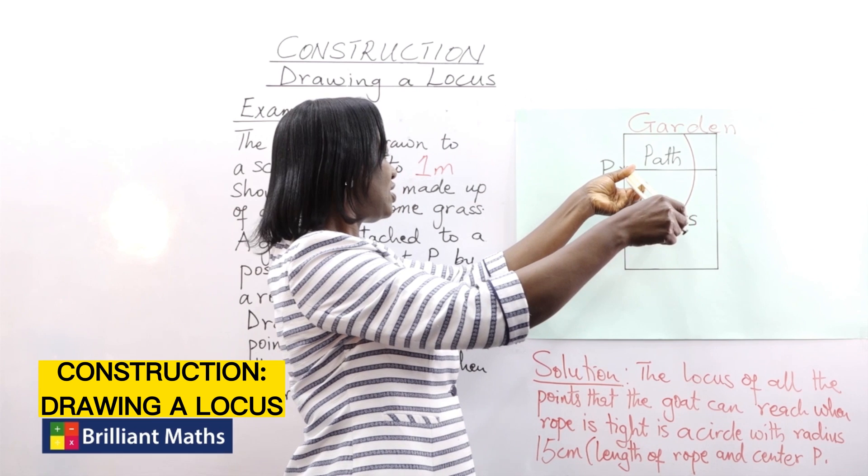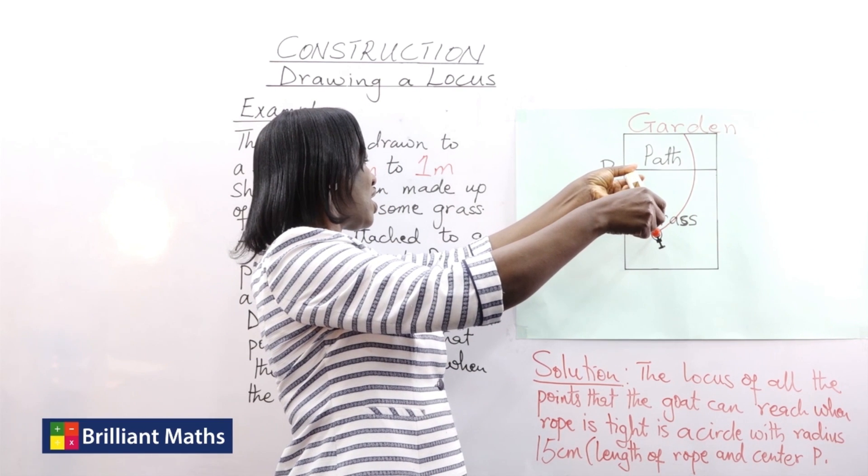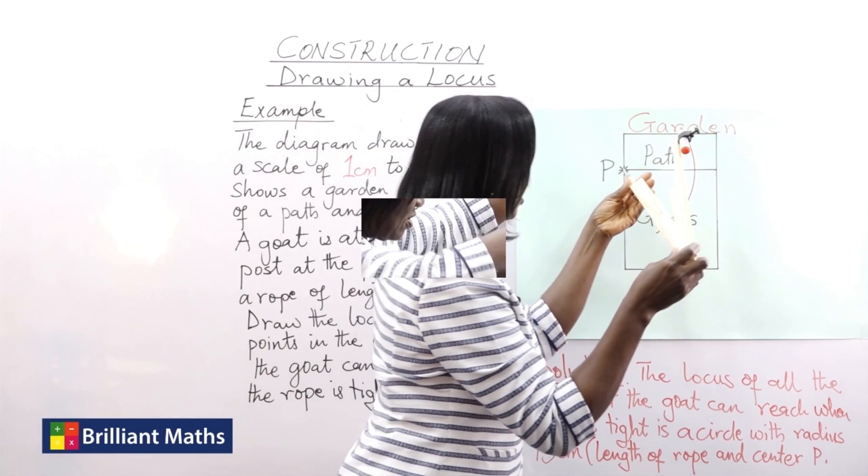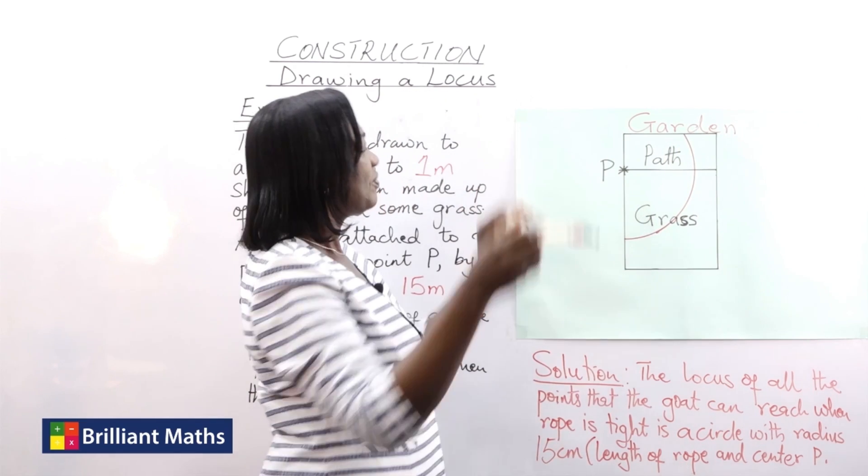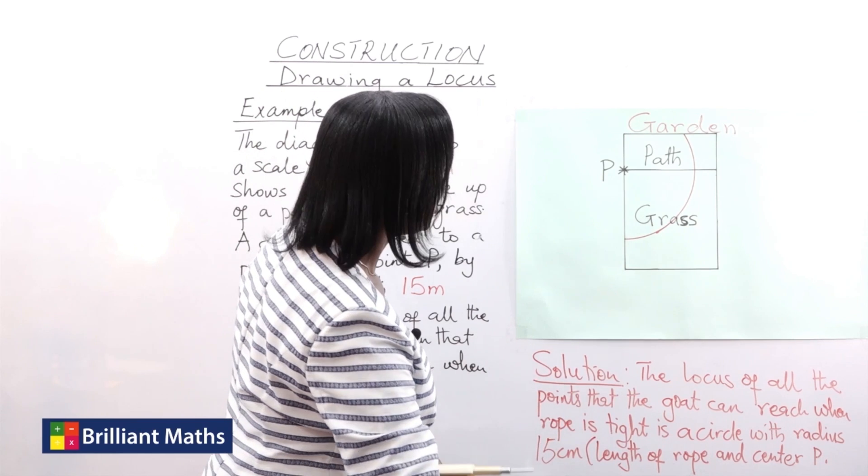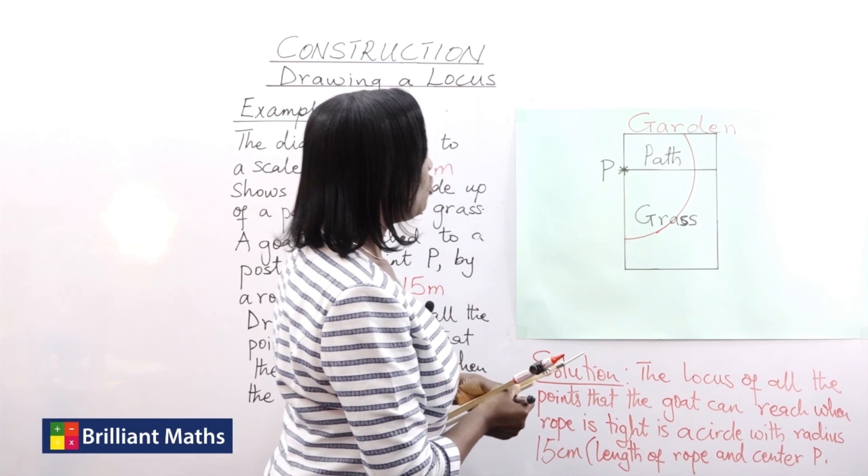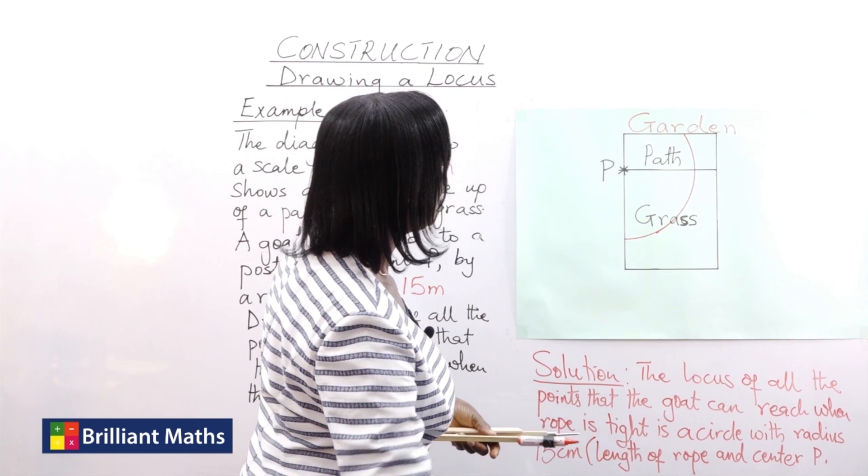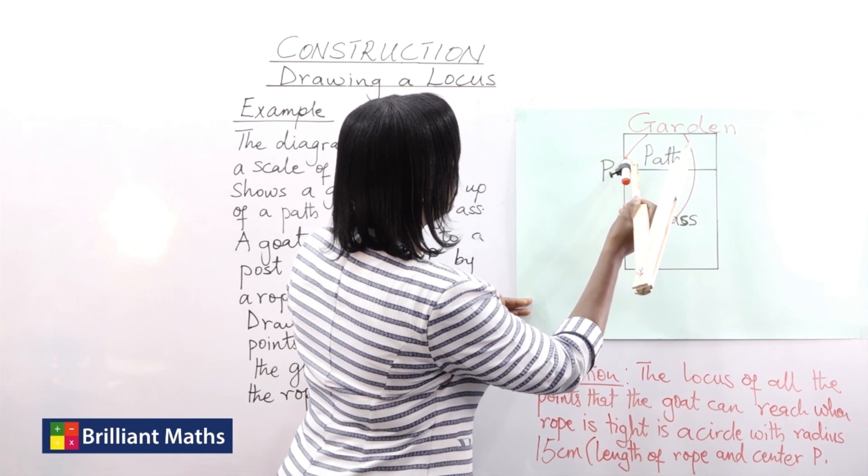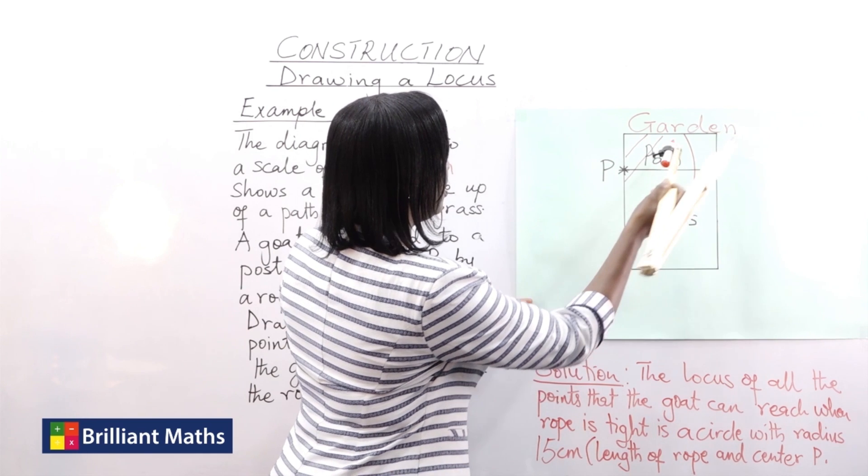So this will be the locus of the points the goat can reach. So the locus of the points the goat can reach within the garden will just be this part of the garden.